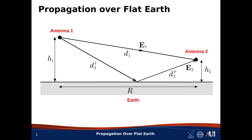Here we have Antenna 1 on the left, which is transmitting, and Antenna 2 on the right, which is receiving. These antennas are at heights H1 and H2 respectively above the Earth, and the Earth between them is perfectly flat. As measured along the surface of the Earth, the spacing between the antennas is R.